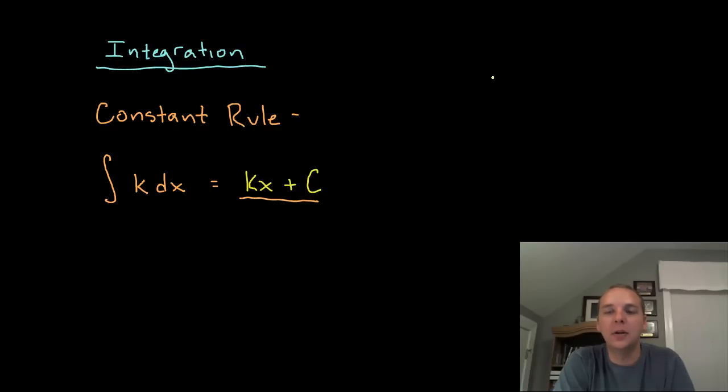Now just real briefly, the reason for this is pretty clear. If your function is a constant, well then we know that the derivative of a constant would be 0, right?